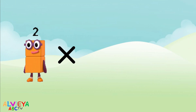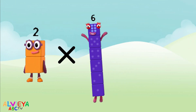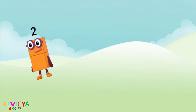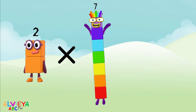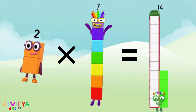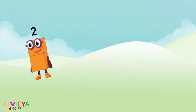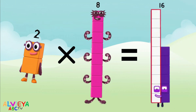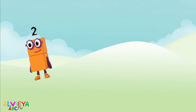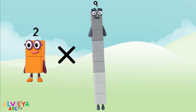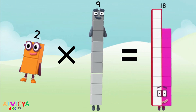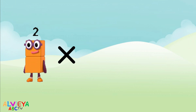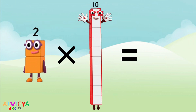Two times six equals twelve. Two times seven equals fourteen. Two times eight equals sixteen. Two times nine equals eighteen. Two times ten equals twenty.